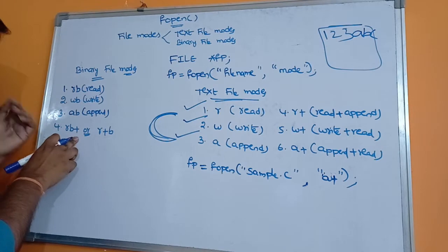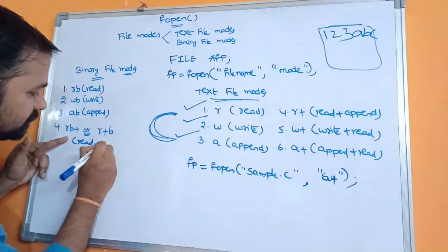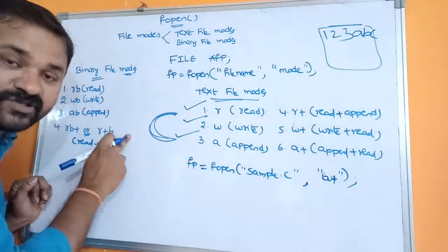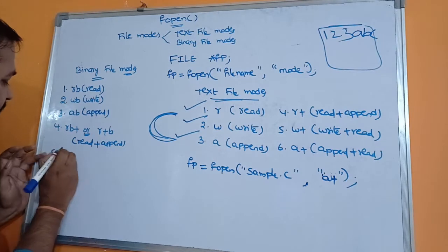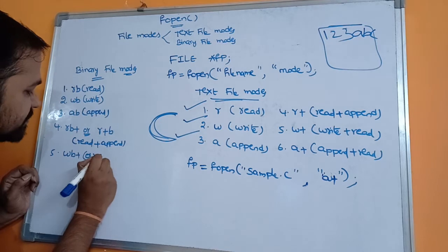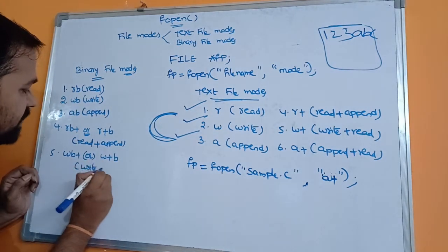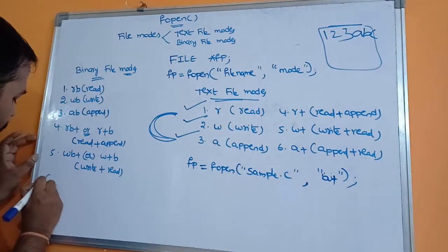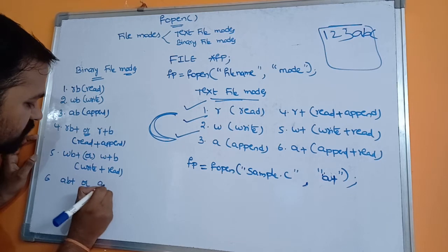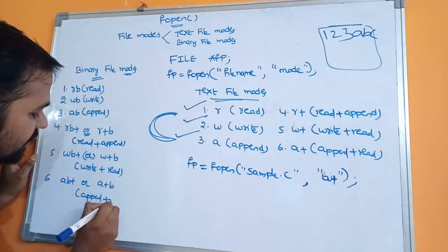The fourth mode is rb+ (also written as r+b) — meaning read plus append on binary file. The fifth is wb+ (also written as w+b) — meaning write plus read on binary file. The sixth is ab+ (also written as a+b) — meaning append plus read on binary file.